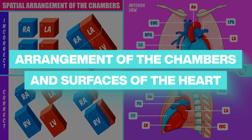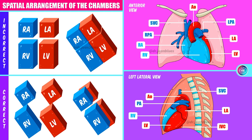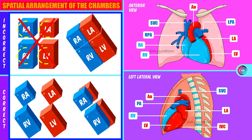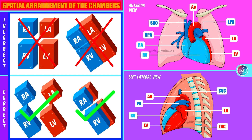Arrangement of the chambers and faces of the heart. One of the things that most confuses students is understanding the spatial layout of the heart and its different chambers. The cubes on the left-hand side represent the four chambers — the right atrium, right ventricle, left atrium, and left ventricle — and we will use these to facilitate understanding. First, the heart is not vertical; rather, it is inclined slightly to the left. Second, the chambers are not arranged in a perfect parallel shape one next to another. Rather, there is an overlap in which the right-hand chambers are located slightly in front of the left-hand ones.